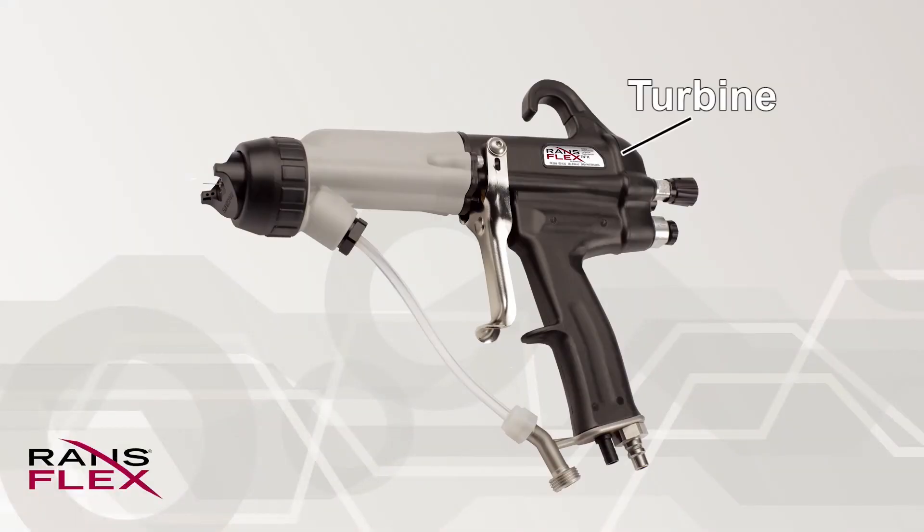Here, there is the air-driving turbine that generates voltage. The US patented turbine offers high performance and energy efficiency. There is a component called cascade inside the gun body, and this transforms low voltage generated at the turbine to high voltage.